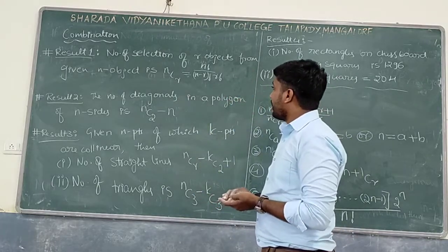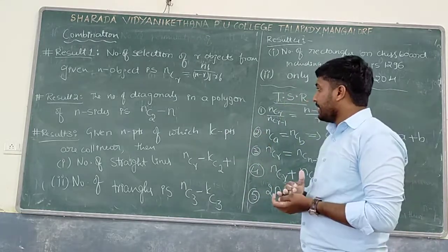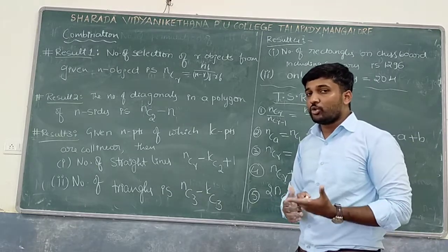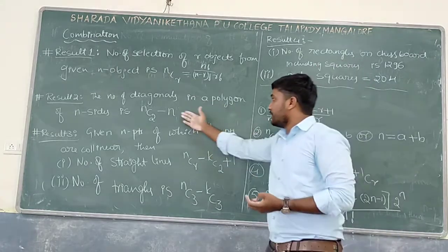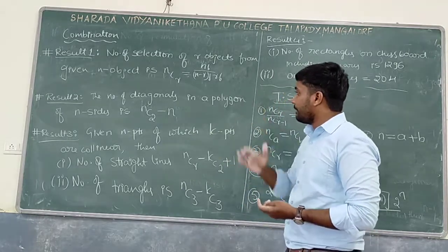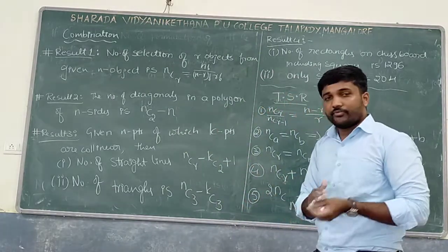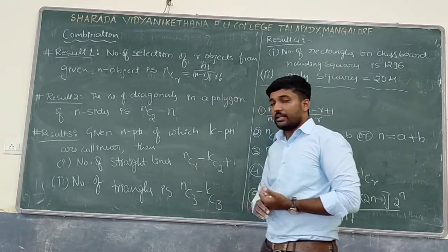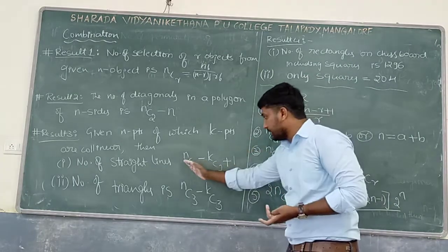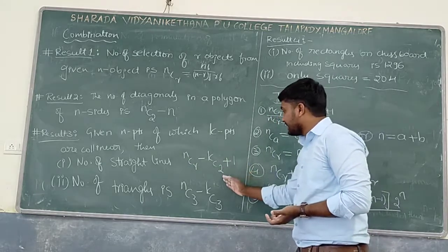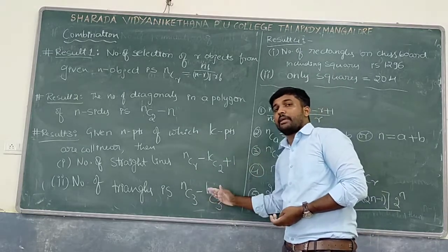Result 2: The number of diagonals in a polygon of n sides is nC2 − n. For drawing a diagonal we need two points; from n endpoints we can draw nC2 lines, minus n sides, giving the number of diagonals. Result 3: Given n points of which k points are collinear — number of straight lines = nC2 − kC2 + 1; number of triangles = nC3 − kC3.